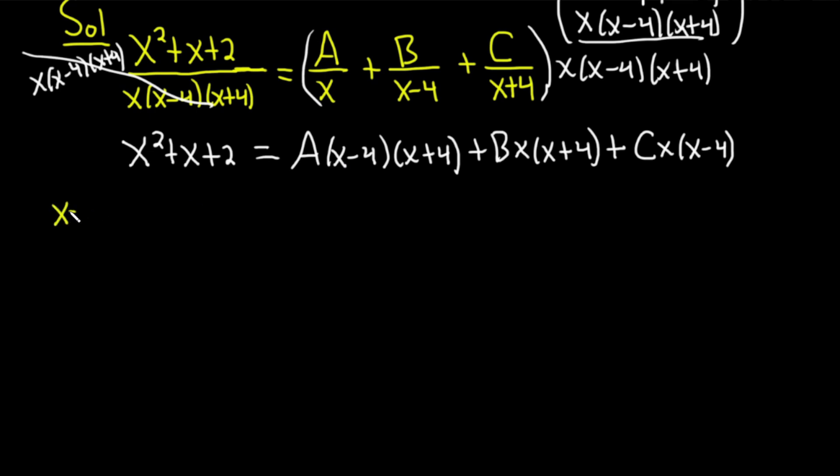So when x is 4, on the left-hand side, we get 4 squared plus 4 plus 2. On the right-hand side, when you plug in a 4 here for the x, you get 4 minus 4, so the whole thing is 0. Same thing with the C. You would get 4 minus 4 at the end here, and it would be 0. So you're left with B times 4 times 8, because 4 plus 4 is 8.